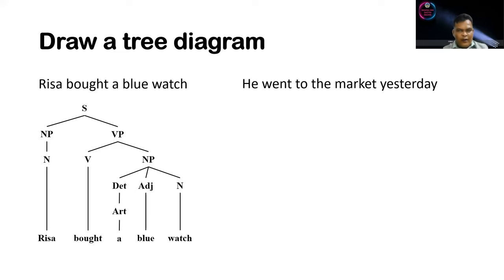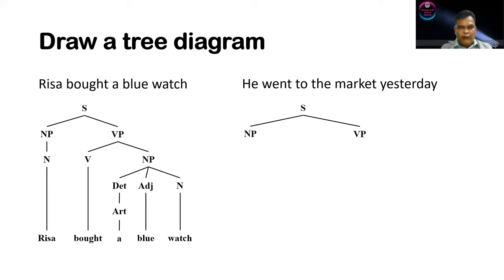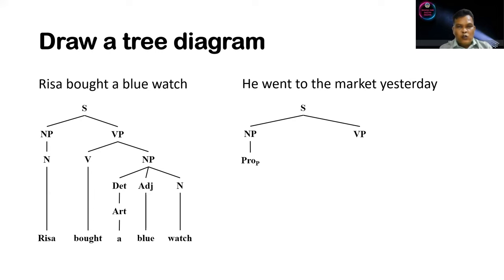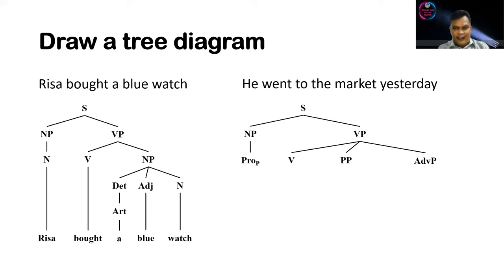Now we have a bit more complicated sentence: 'He went to the market yesterday.' As usual, we have two elements — NP and VP. The NP here is not a noun but 'he,' labeled as personal pronoun or Pro-P. The VP, 'went to the market yesterday,' is composed of three elements: verb, prepositional phrase, and adverb phrase.